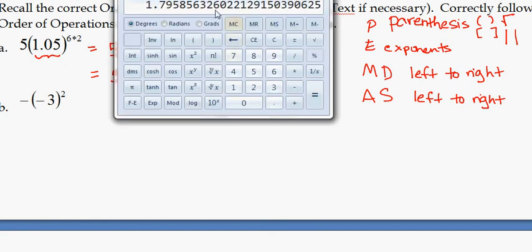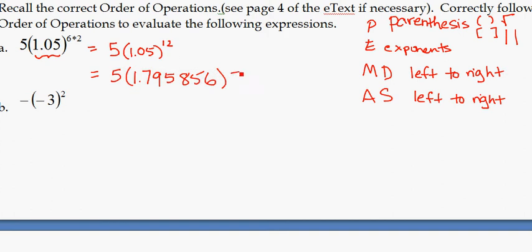and then what I would do in the calculator is actually just keep that answer stored in there, and then multiply times 5 to get an answer that doesn't need any rounding. So all together, we get 8.97928. OK, and I would take advantage of the calculator so you don't worry about rounding.